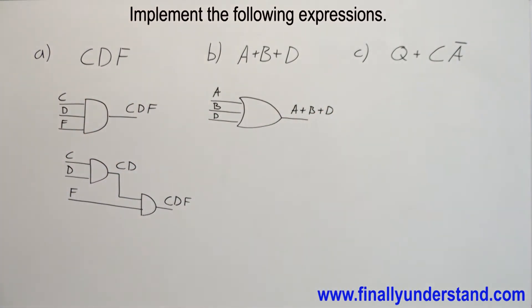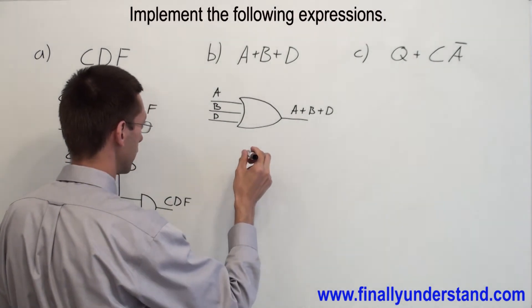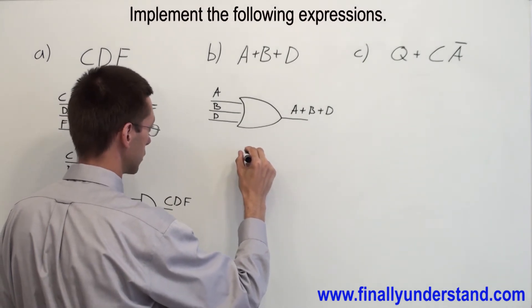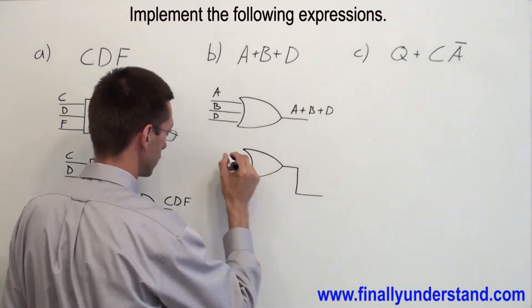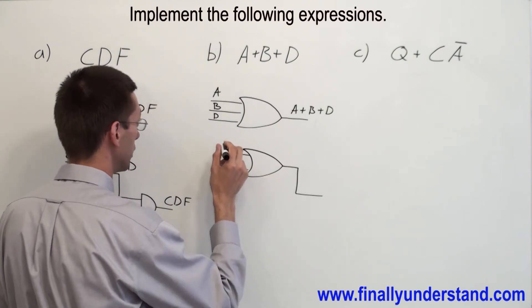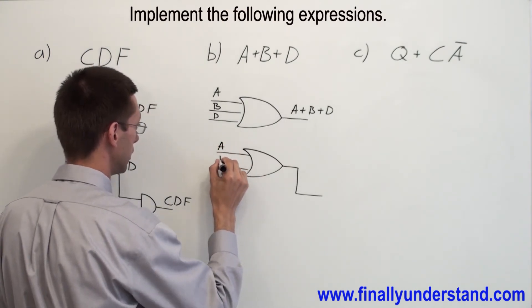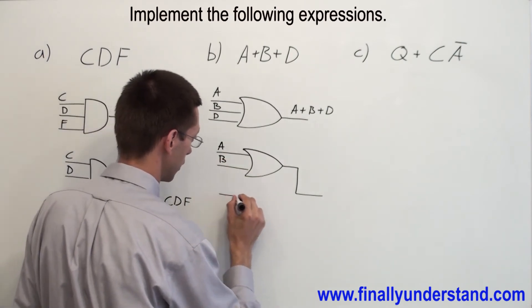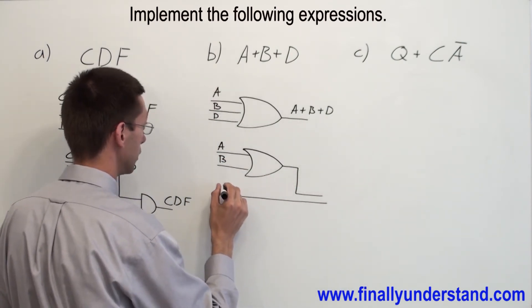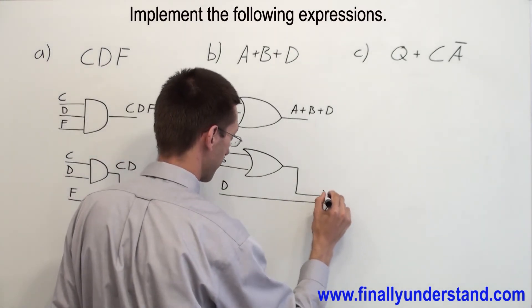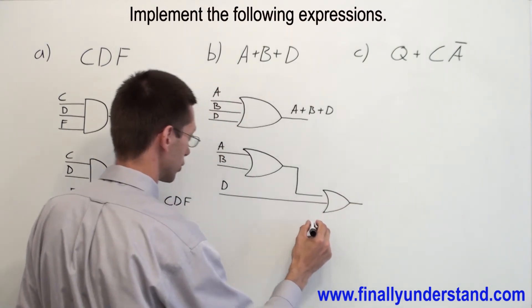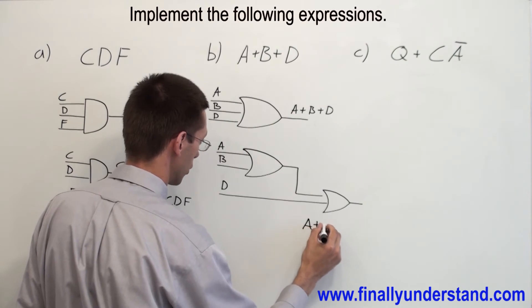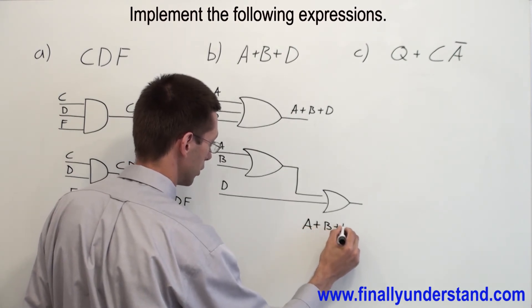For example, at this moment you do not have a three input OR gate. So you have to build it. Again, you are going to use the associative law, which allows you to use two input OR gates. So I have A, B, and OR'd with D. So the output function of this circuit is A or B or D.